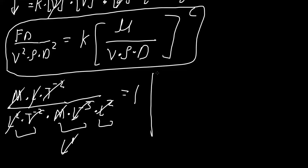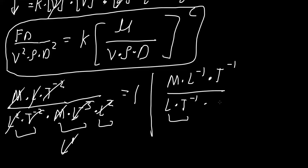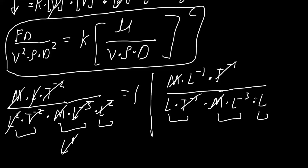We also check the right-side C term: viscosity divided by (velocity times density times D). The dimensions of viscosity are mass times length raised to negative 1 times T raised to negative 1. After substituting all dimensions, mass cancels, times cancel, and the length terms (1 plus 1 minus 3 gives negative 1) cancel with the length raised to negative 1 in the numerator — confirming the term is dimensionless. That's how we solve this problem using Rayleigh's method.